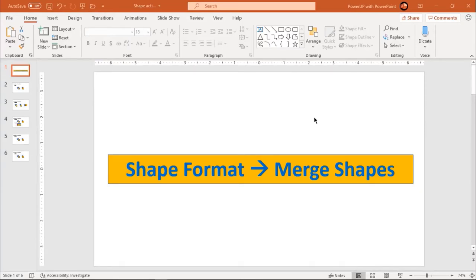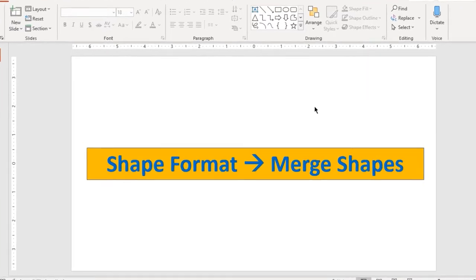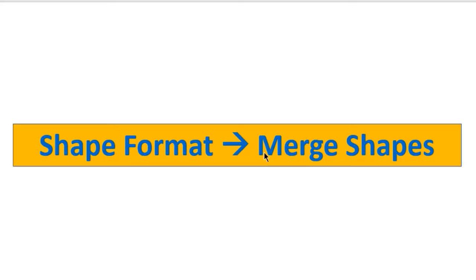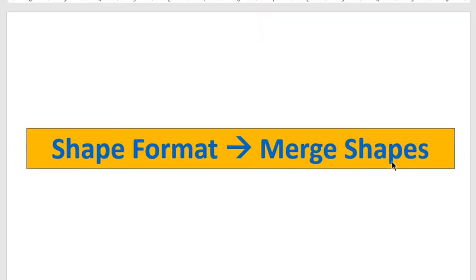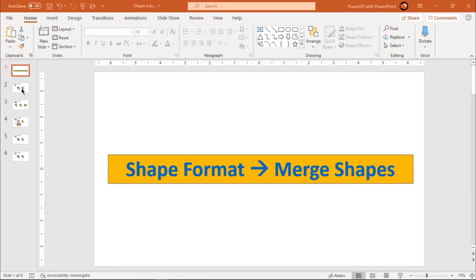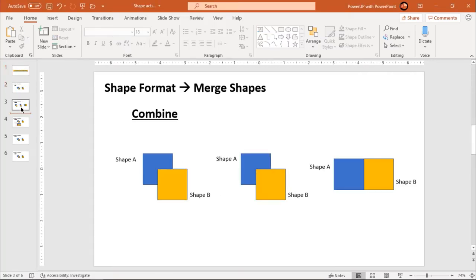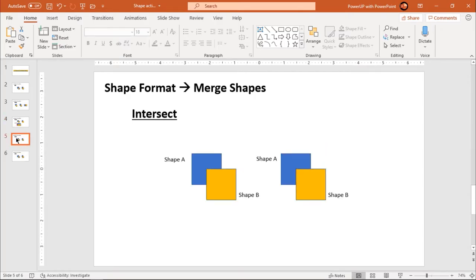Hello everyone, this is PowerUp with PowerPoint. As communicated earlier, we are going to start a PowerPoint basics series of videos. This video will be the first in that series, and in this video we are going to learn about shape format — specifically, merge shapes. As you all know, we have five different options for merge shapes: union, combine, fragment, intersect, and subtract. Let us go through each of these options and learn what exactly they do.